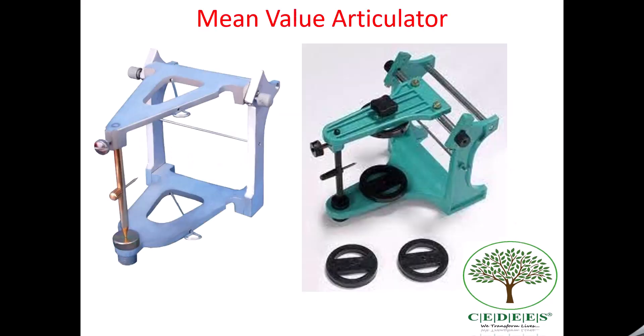Mean value articulators basically come in two designs. The one on the left is the old fashioned one and the one on the right is probably the newest design. The difference is that the newer one has certain mounting discs attached to it, so it has an extra pair and you can probably use it for different cases at the same time.